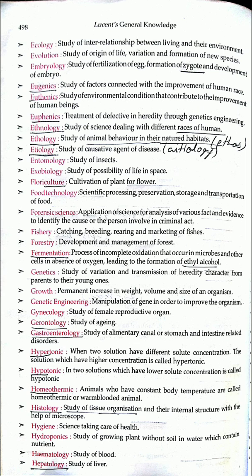Fishery, forestry, food technology, and forensic science are other terms. Fermentation is the anaerobic respiration of organic matter in which ethyl alcohol is produced. When anaerobic respiration takes place, a byproduct — ethyl alcohol — is created, which is used as a liquor. This process is called fermentation.